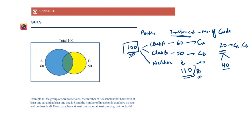So we have 70 people who have only one membership, 20 people who have two memberships, and that leaves us with 10 people who have no membership — and this adds up to give us 100.